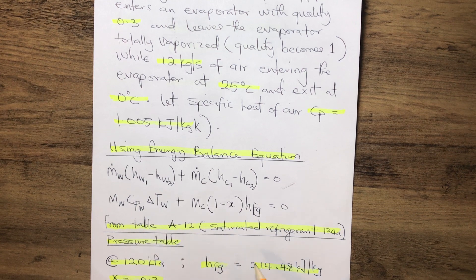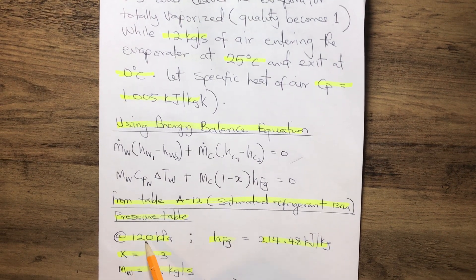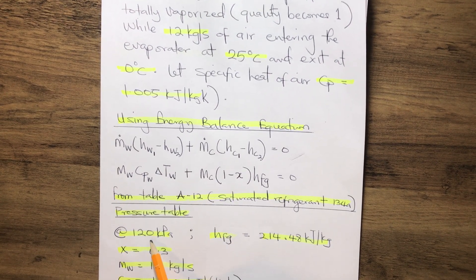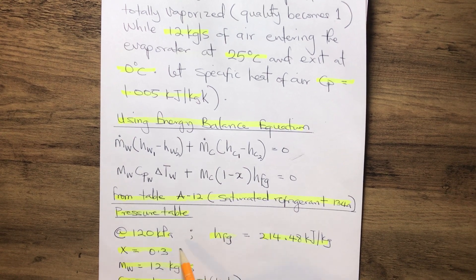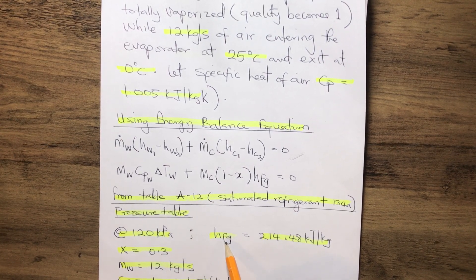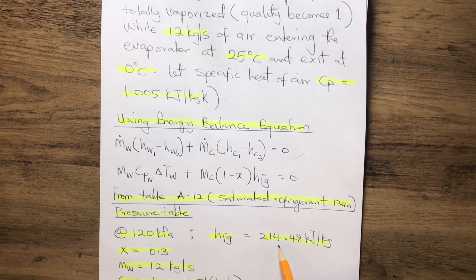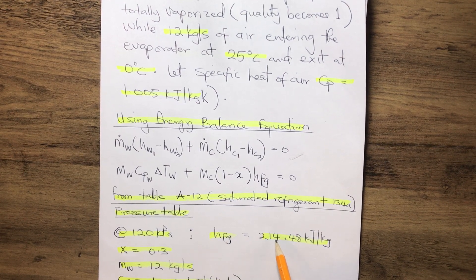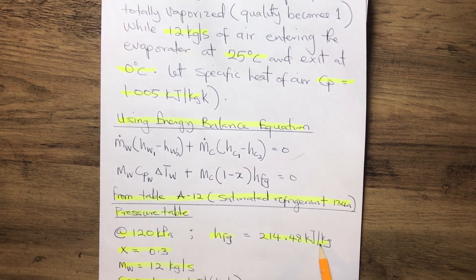we can deduce that at 120 kilopascal, which is being given, our HFG, which is the entropy of the mixture, HFG equals 214.48 kilojoules per kilogram.